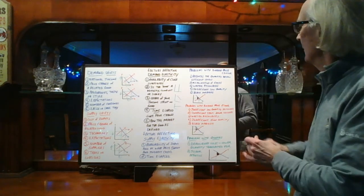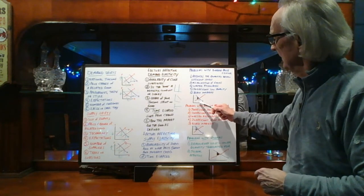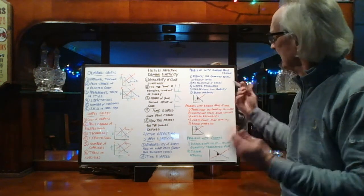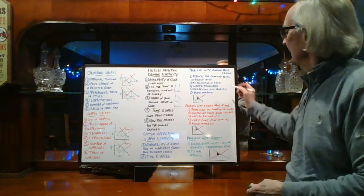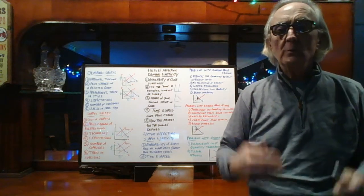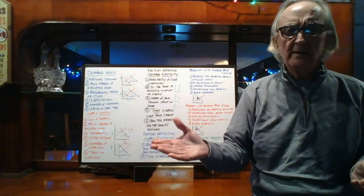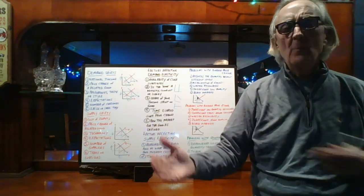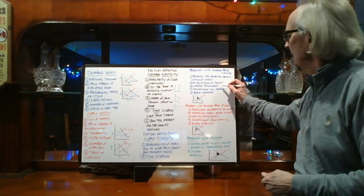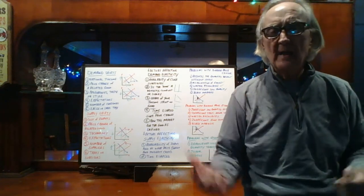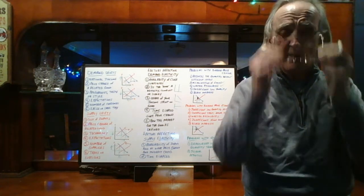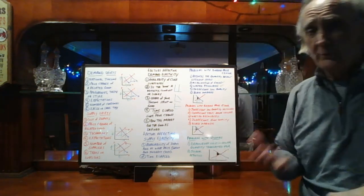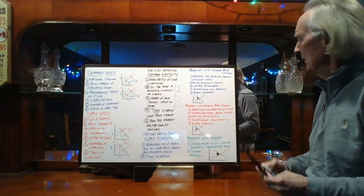Problems with price ceilings: first, it reduces quantity below the efficient level — here's what buyers want but we're cut back to where the ceiling hits the supply curve. Second, misallocation of goods — people who need and deserve the apartments aren't getting them, while people who can more than afford it have secured them. Third, wasted resources — families spend time, energy, and money searching for a decent apartment in New York, which is a huge waste.